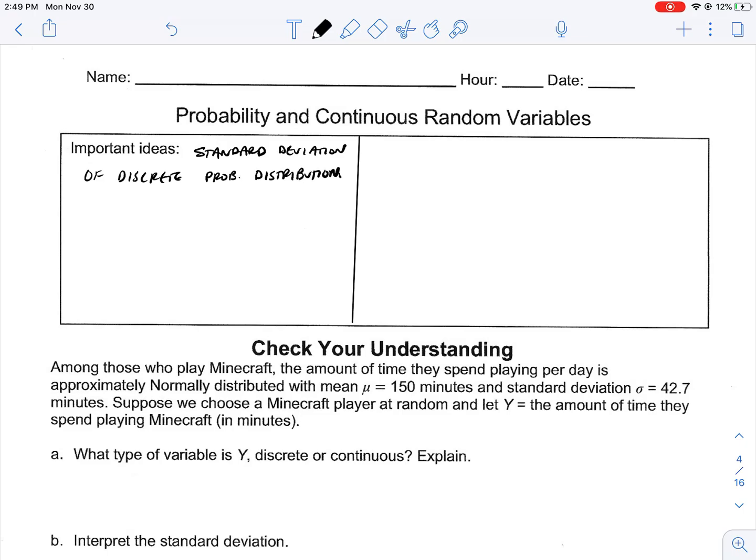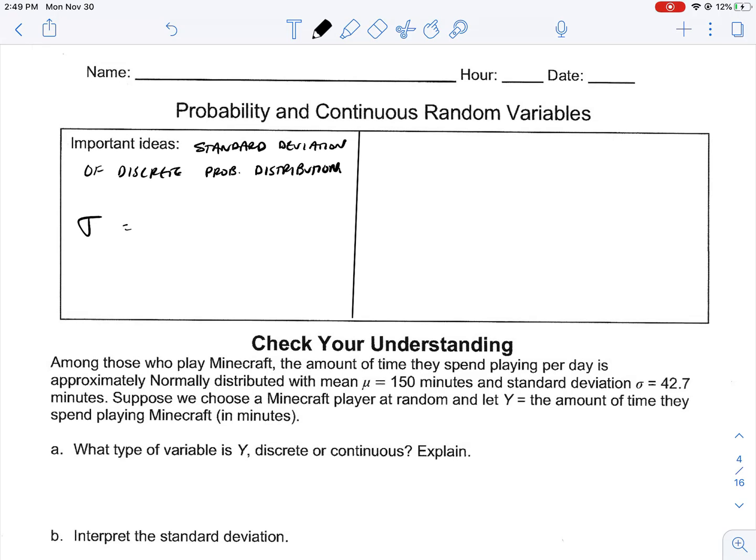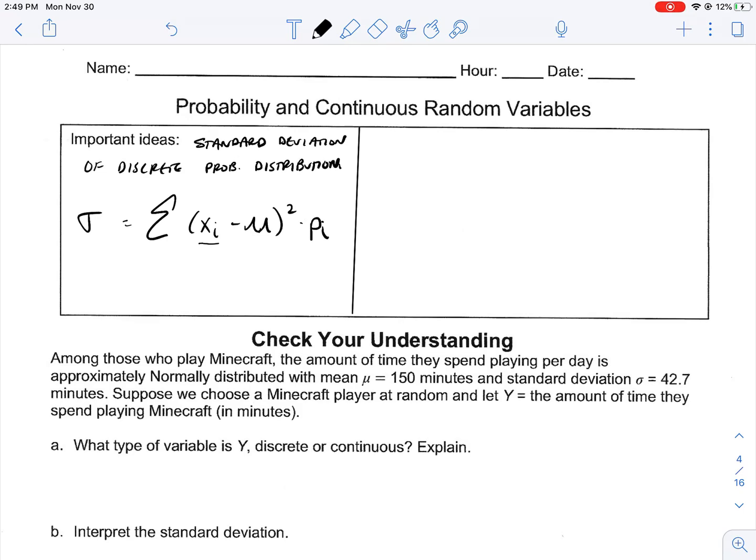We can't start to talk about continuous before we talk about discrete. In this case, our standard deviation is going to be equal to the summation of our value minus the expected value squared times its prevalence. Meaning, take what we have, subtract the expected value to find out is it above or below, square that to make it a distance, and then multiply it by how often that happens or the weight, the probability of that happening.